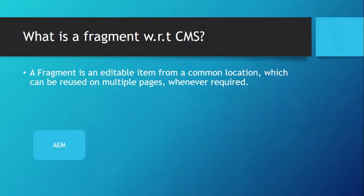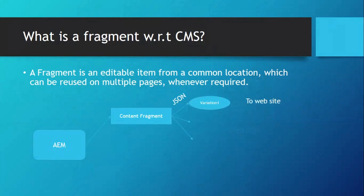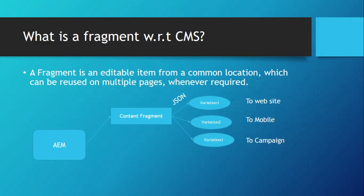AEM provides content fragments, and the content fragment output is exported as a JSON format and it can have variations. Say we have variation 1 and that gets rendered to a website. We have variation 2 which gets rendered to a mobile and variation 3 gets rendered to a campaign.